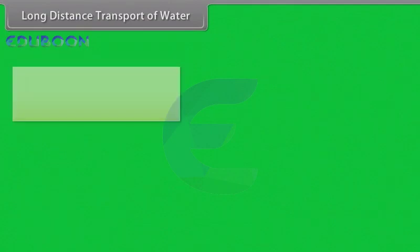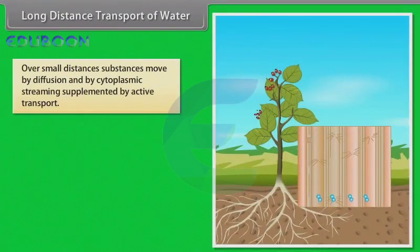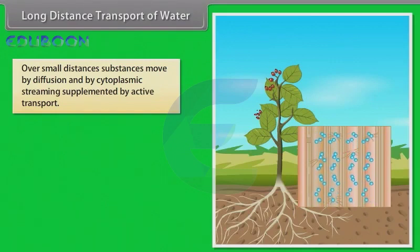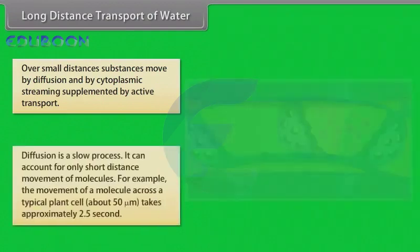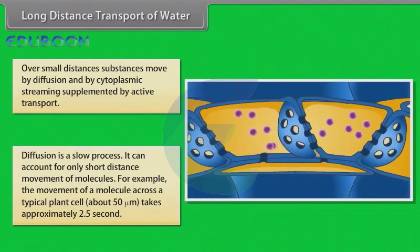As we all know, over small distances substances move by diffusion and by cytoplasmic streaming, supplemented by active transport. Long distance transport of substances within a plant cannot be by diffusion alone. Diffusion is a slow process — it can account for only short distance movement of molecules. For example, the movement of a molecule across a typical plant cell takes approximately 2.5 seconds.